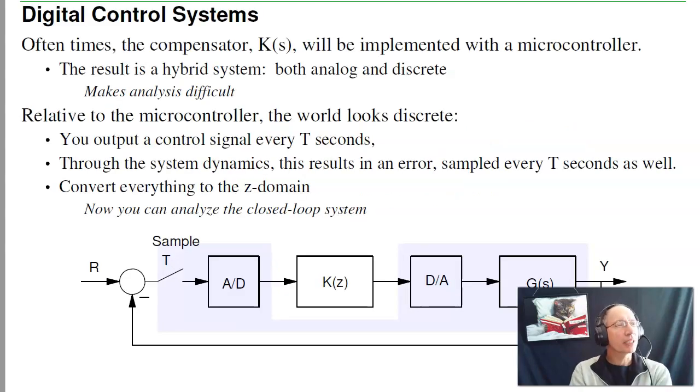Oftentimes a compensator K(s) is implemented with a microcontroller. That results in a hybrid system. I've got a discrete time system, the compensator K(z), controlling an analog system, G(s). That makes analysis difficult. I can analyze in the Z-plane, I can analyze in the S-plane, but mixing planes is really difficult.